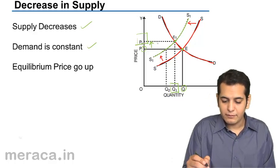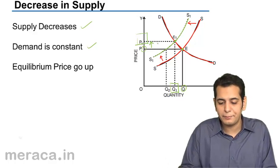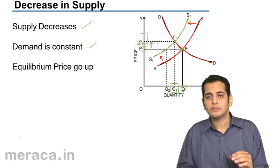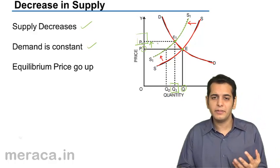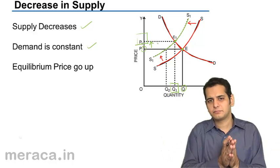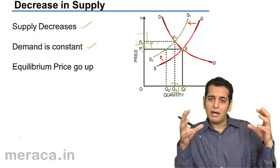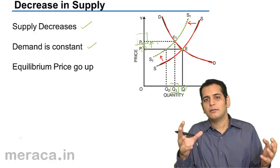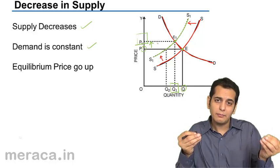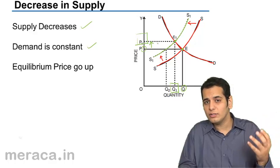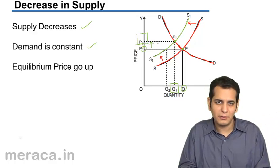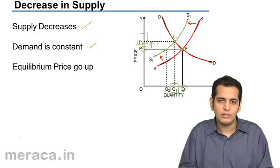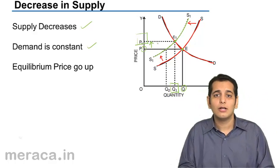The price has gone up — it has shifted from P to P1. This means when supply decreases with demand remaining the same, the demand for the goods is the same but the supply of the goods has decreased. So what will happen is people will be ready to pay a higher price for the goods. They want the goods, but the goods are in short supply. So to get the goods, they will be ready to pay a higher price, and thus the equilibrium price will go up.